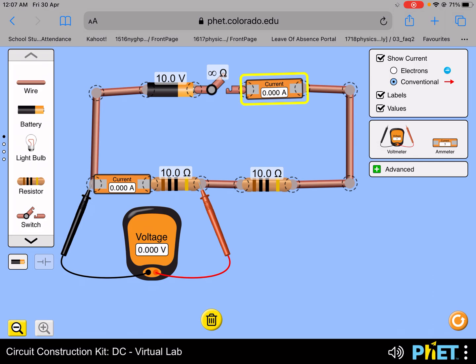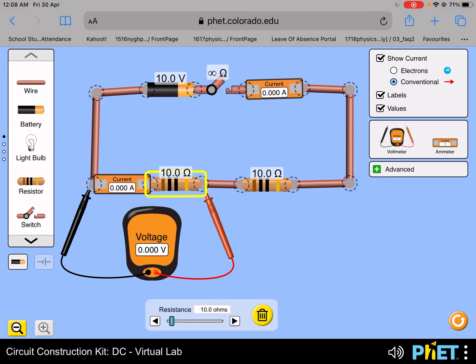We have two ammeters that will show the current through this circuit and a voltmeter to measure the potential difference across the rheostat, which is the first resistor.